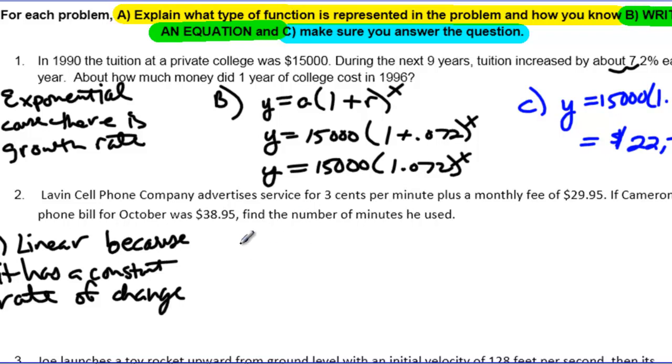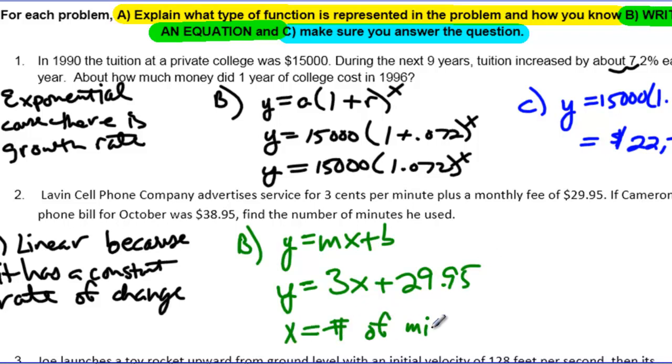Part B has me write an equation. I'm going to be using a linear equation, so I'm going to be using y equals mx plus b. In this case, remember my common difference is my slope or my rate of change, so it's 3. And my $29.95 is my starting point. X in this problem is going to equal the number of minutes. And I should have went up here and said what X is in the first equation - X equals the number of years from 1990.